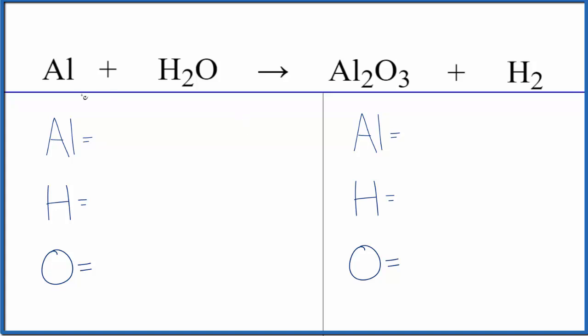So let's count the atoms up first. We have one aluminum, two hydrogens, and one oxygen in the reactants. In the products, two aluminums, three oxygens, and two hydrogens.